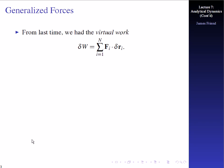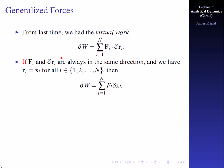From last time, we had the virtual work: delta W is equal to the sum from i equals 1 to n of F sub i dot delta r sub i, and of course these are both vectors. If F_i and delta r_i are always in the same direction, and we define r_i equal to x sub i for all i from 1, 2, 3 all the way to n, then we can get rid of the vector part.